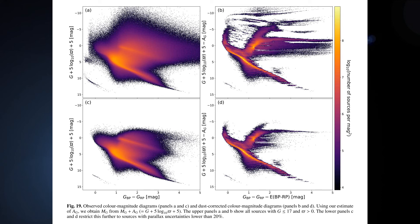The bottom two panels show the same but restricting to stars with higher parallax precisions — parallax uncertainty less than 20 percent. This leads to a further improvement because by doing this we actually get better extinction estimates, since we use the parallax to estimate the extinction.